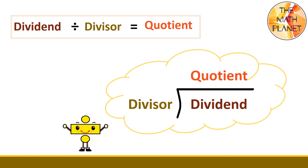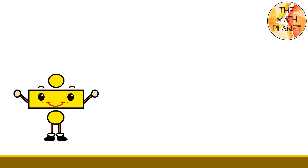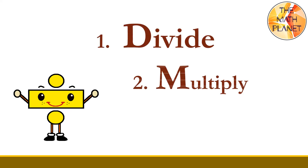Sometimes, things don't work perfectly and we cannot divide things up exactly. This happens when the dividend is not a multiple of the divisor. In this case, the division ends up with a leftover, which we call the remainder. Note that the remainder must be a number that is less than the divisor. The three main steps for long division are: divide, multiply, then subtract. And we will keep repeating these three steps for each digit of the dividend.